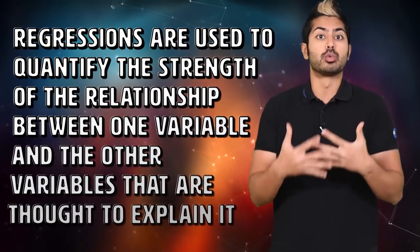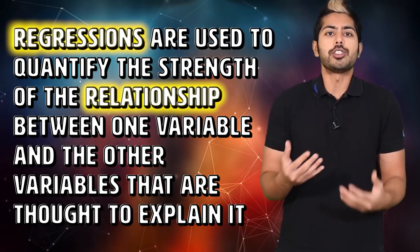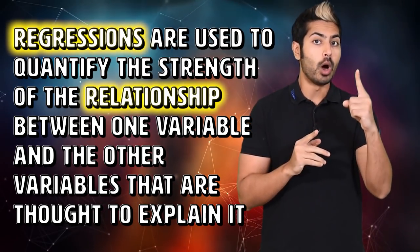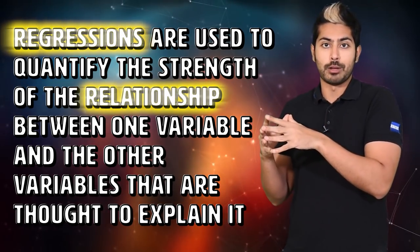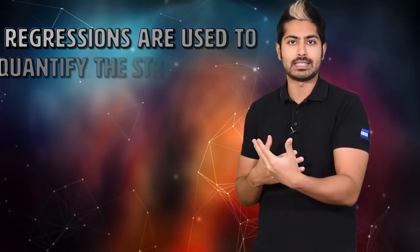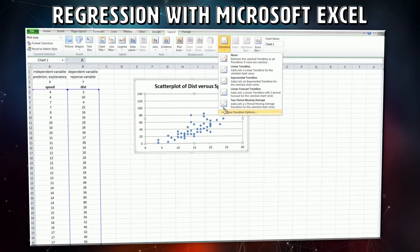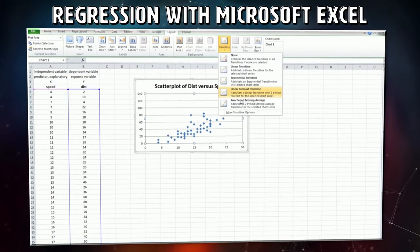To help answer these types of questions, data scientists use regression models. Regressions are used to quantify the strength of the relationship between one variable and other variables that are thought to explain it. These days, running hundreds of thousands of regressions has become extremely simple.